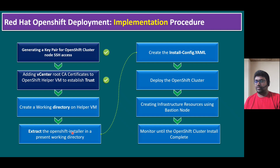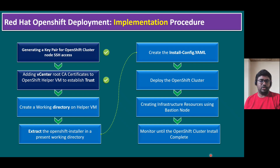The next step is to extract the OpenShift installer in the present working directory. We have to extract the binary file. In our previous session, as part of pre-implementation steps, we already downloaded the OpenShift installer binary from the Red Hat website. Those binaries come as tar.gz files, which we are going to extract now.